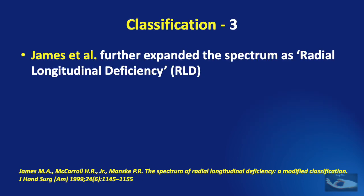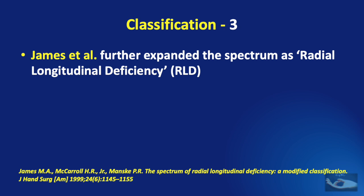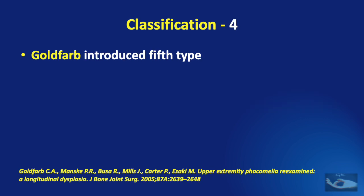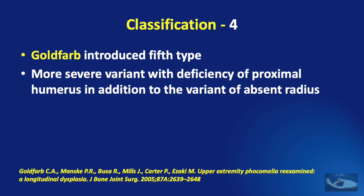James et al. in 1999 further expanded the spectrum, adding the hypoplastic thumb and other radial defects such as congenital radioulnar synostosis and congenital radial head dislocation alongside radial club hand. Goldfarb in 2005 introduced a fifth type to include the more severe variant with deficiency of the proximal humerus in addition to absent radius.